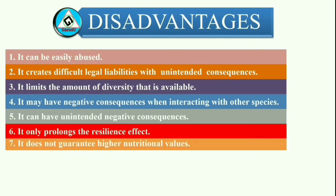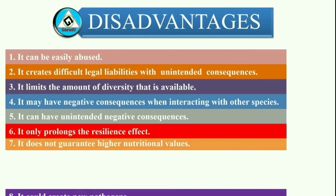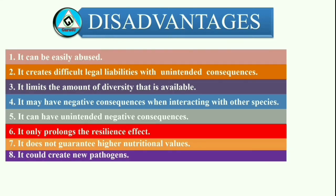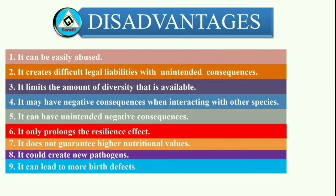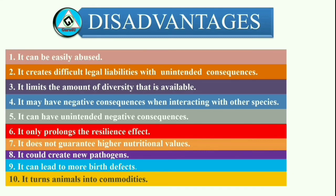It does not guarantee higher nutritional values. We can genetically engineer plants and animals to have higher nutritional values, but there is no guarantee that the outcome will match what has been envisioned. It could create new pathogens. The goal of increasing resistance to certain pests or disease may happen through genetic engineering, but the genes of resistance can also be transferred to the pests or the pathogens. That creates a spiral of increasing risk to the human food chain, especially if the pathogen can affect multiple species. It can lead to more birth defects. Genetic engineering may create stronger, healthier plants and animals, but it may also create more plants and animals with mutations or birth defects that can harm the species. It turns animals into commodities. Genetic engineering could be used for enhancing meat production, but it could affect the overall health of the animals.